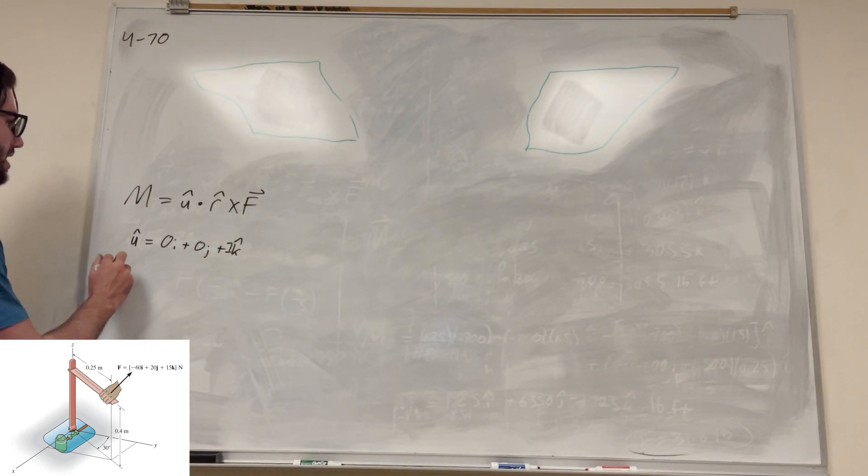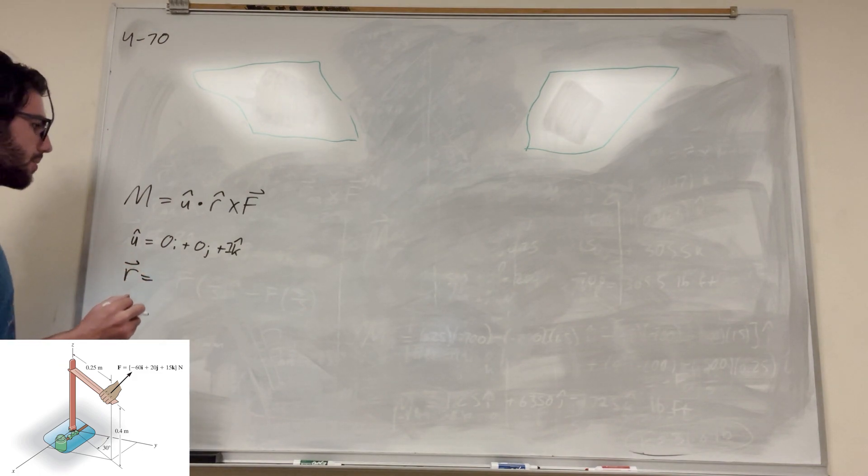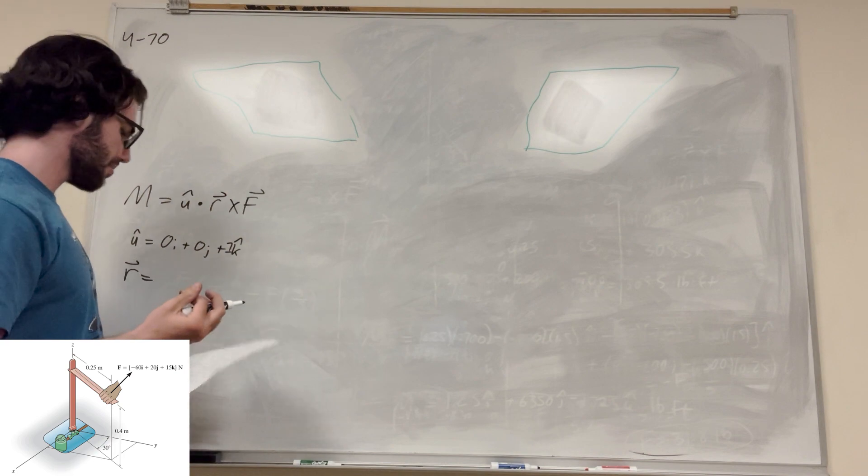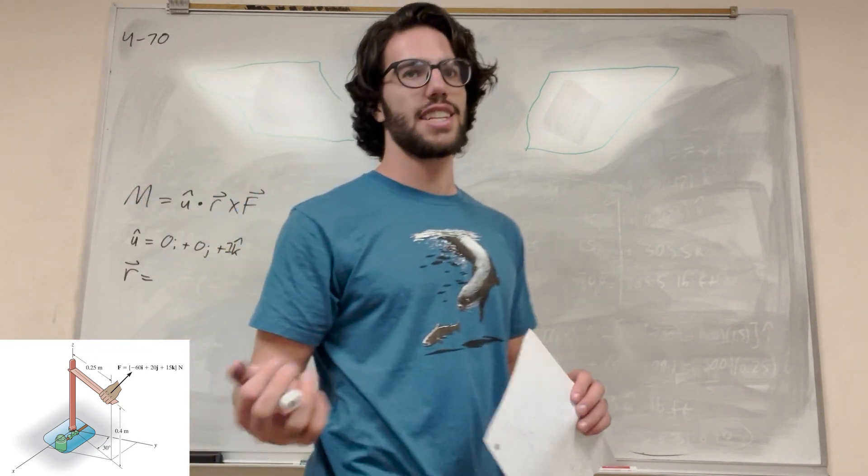So r, right? r is what we need to actually figure out. So r, well, what is r? Oh, this is not a unit vector. r, well, tip to tail, right? It's a position vector.